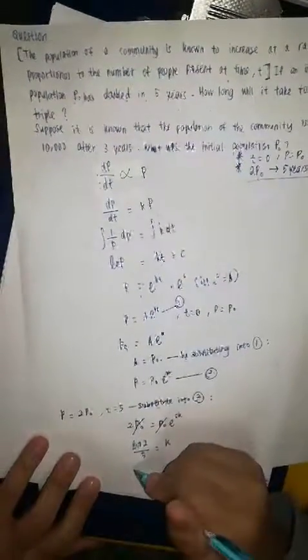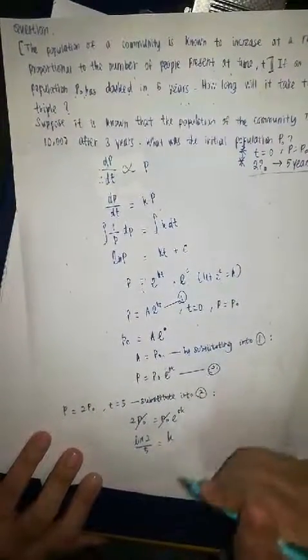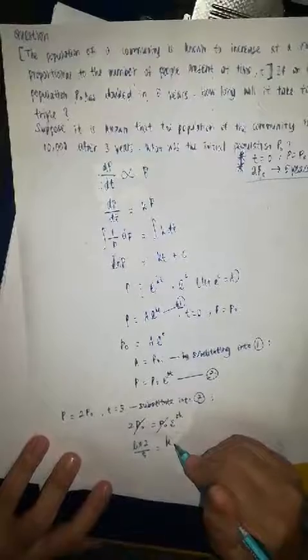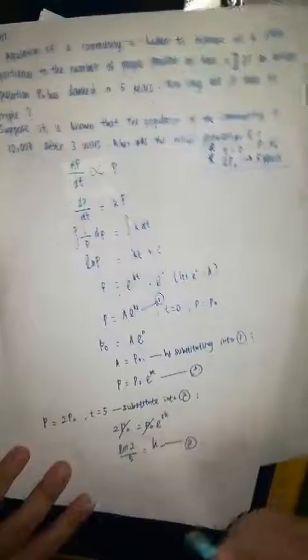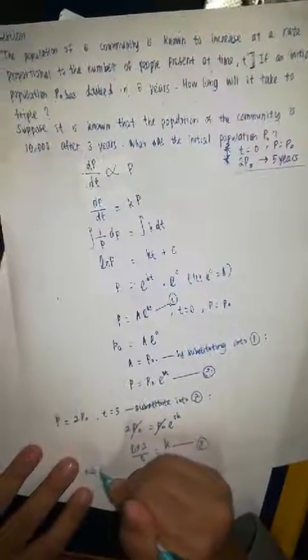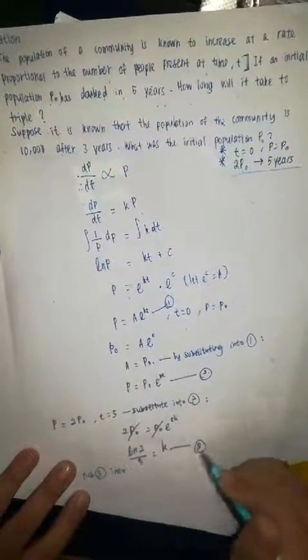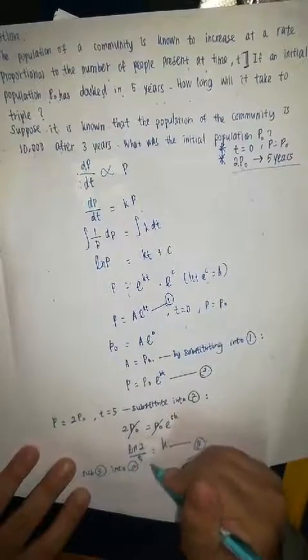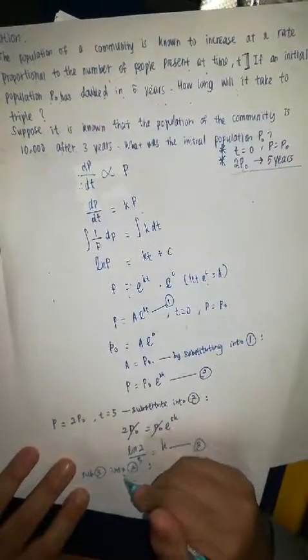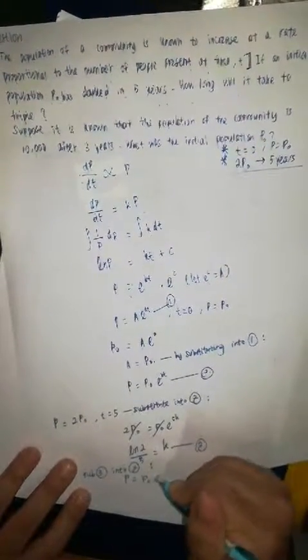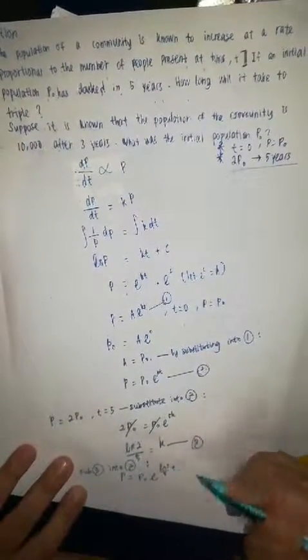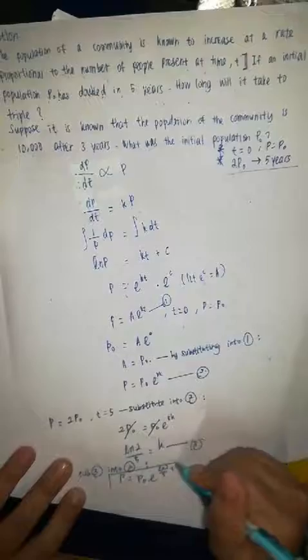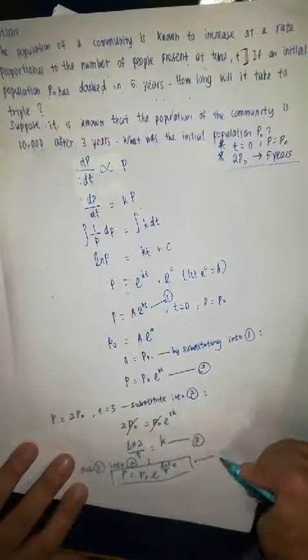So, this is our general equation. With this, we substitute equation 3 into 2. And then, P is equal to P₀ e to the power of ln 2 over 5 times T. So, this is our general equation.